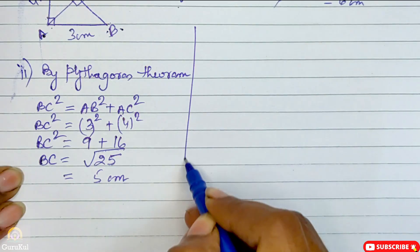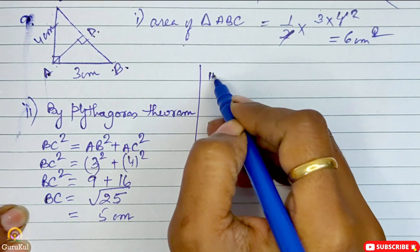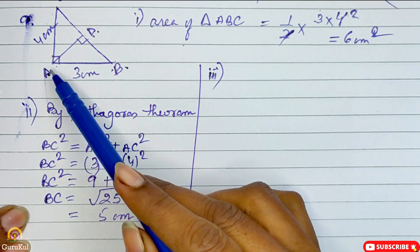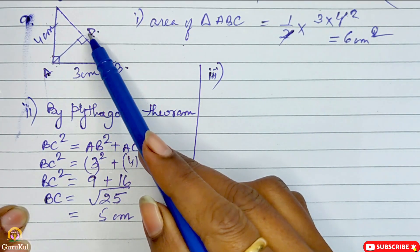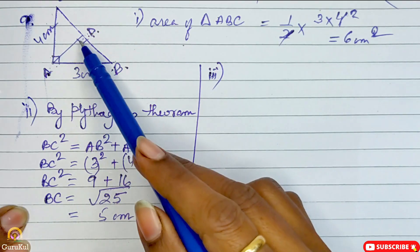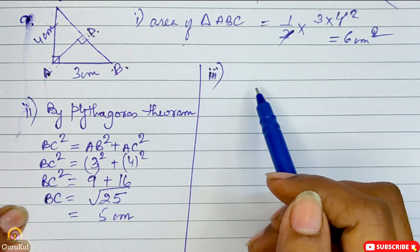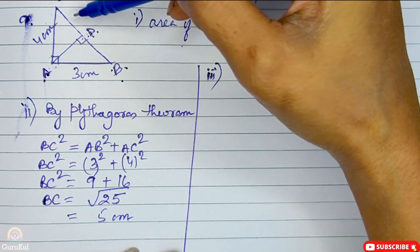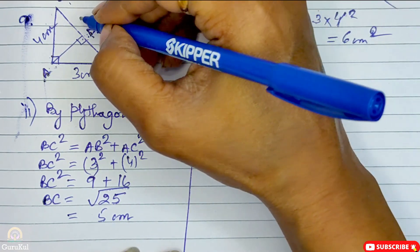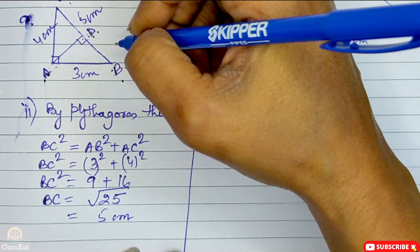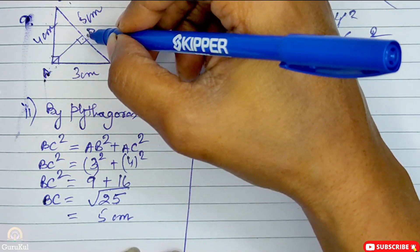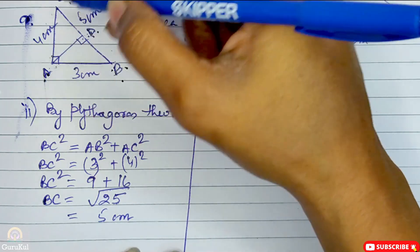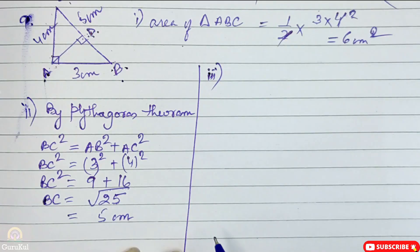Now we come to part 3, which is finding the length of the altitude from A to BC. So this AD line, we need to find its length. Now we will take base BC, whose value we got as 5 centimeters, and we need to find the height. The figure is the same, that means the area is also the same as what we found in part 1.